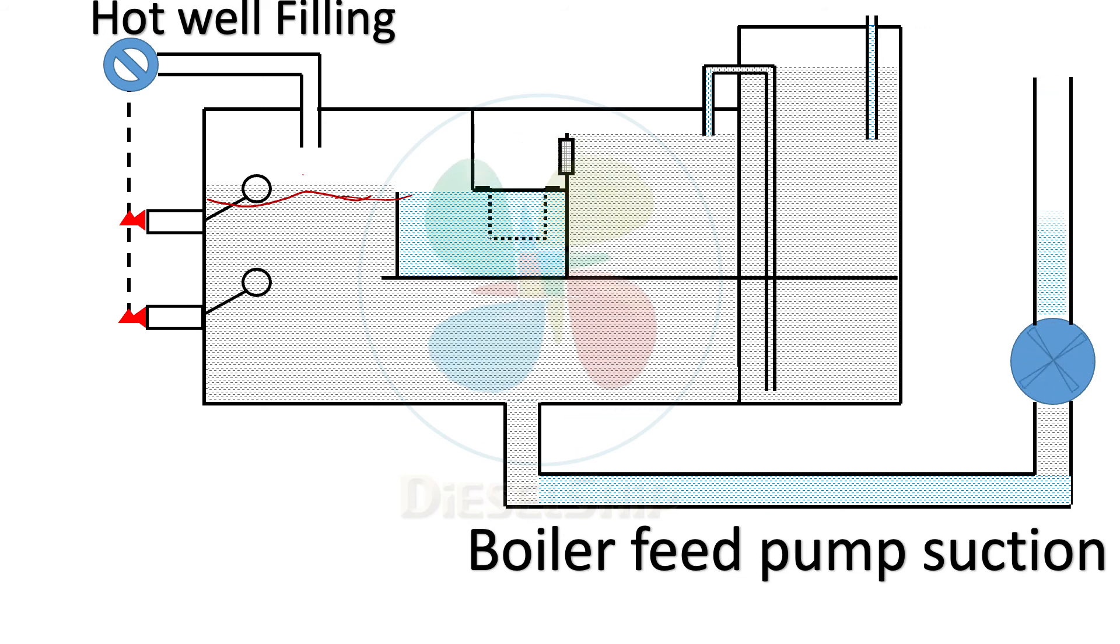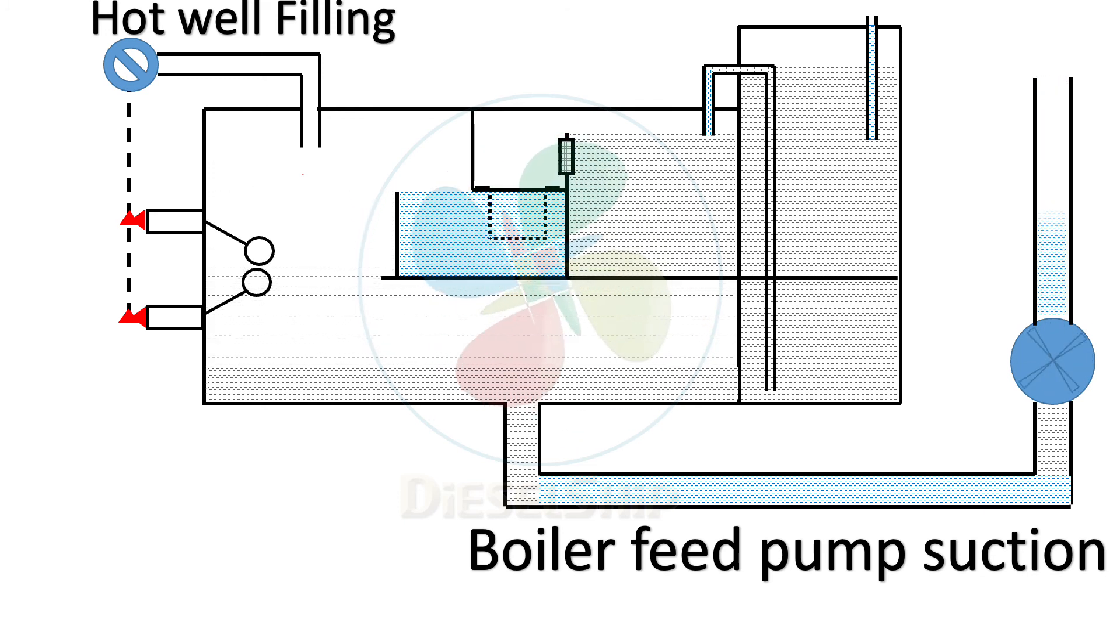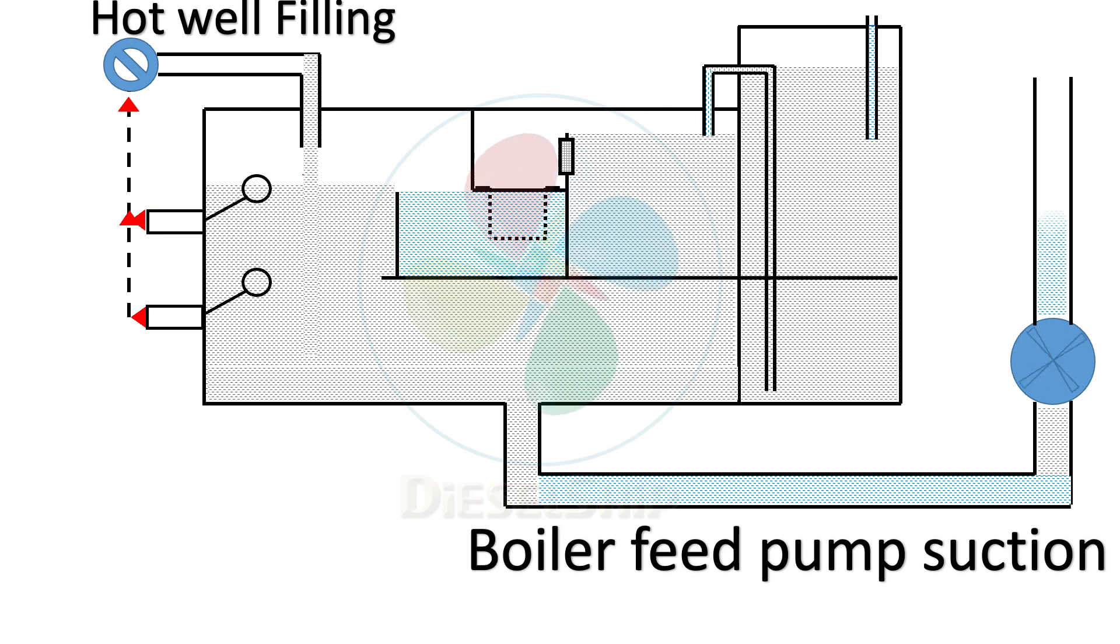Let me simulate the water level dropping. The float drops down and triggers the hot well filling valve to open. The hot well filling starts to fill up. Now the level starts coming up to this safe level. And now the float will tell the hot well filling to stop filling. The significance of why I showed you this filling separately is that you should always remember the level has to be maintained only till here. This is usually asked in your exams, competency exams, be it class 4 or class 2 or even class 1.